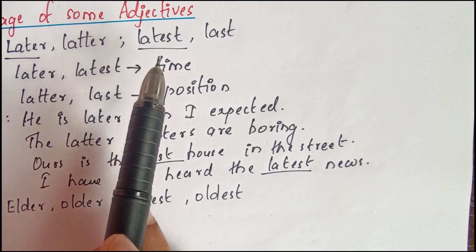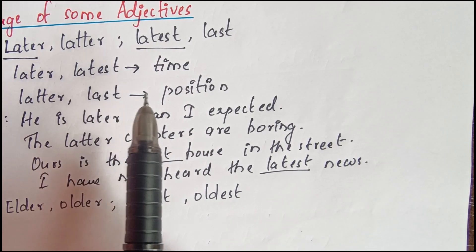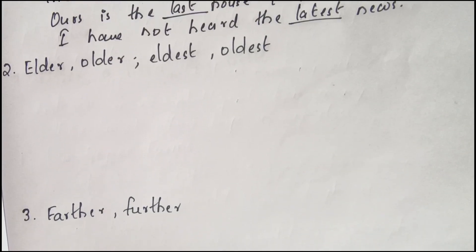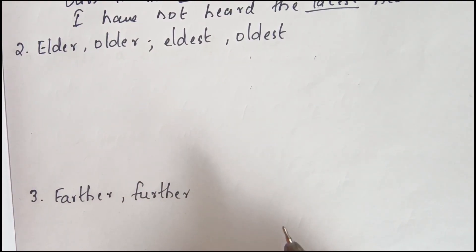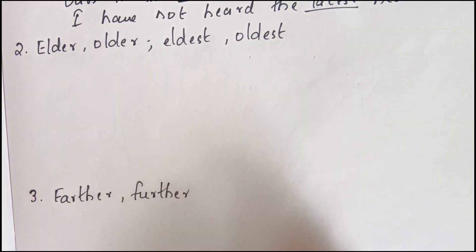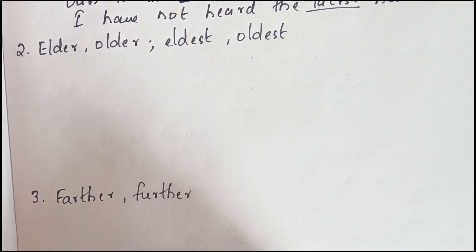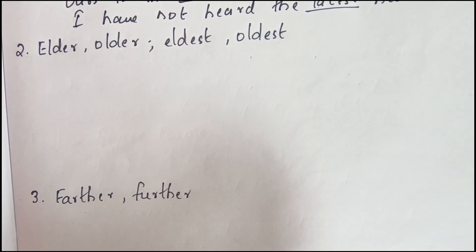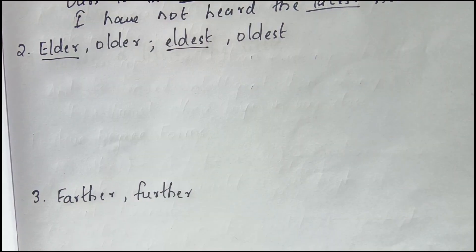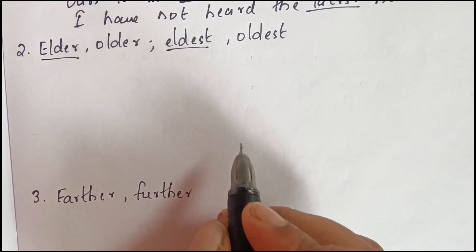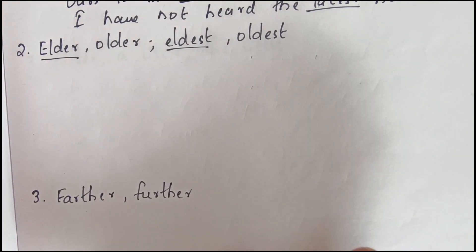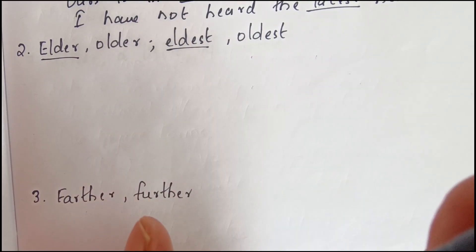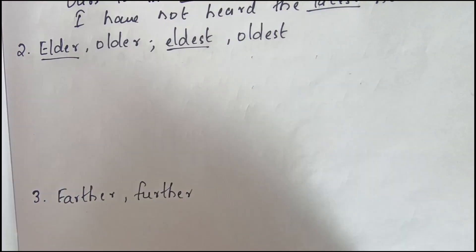So, later and latest describe time, while latter and last describe position. Next, we discuss elder, older, eldest, and oldest. Elder and eldest are used only for persons, and specifically confined to members of the same family. Older and oldest are used for both persons and things.